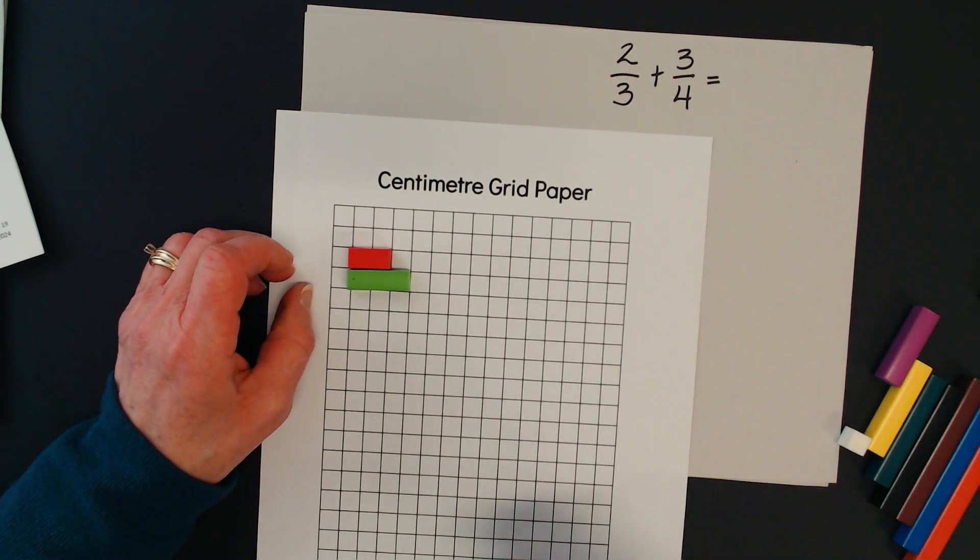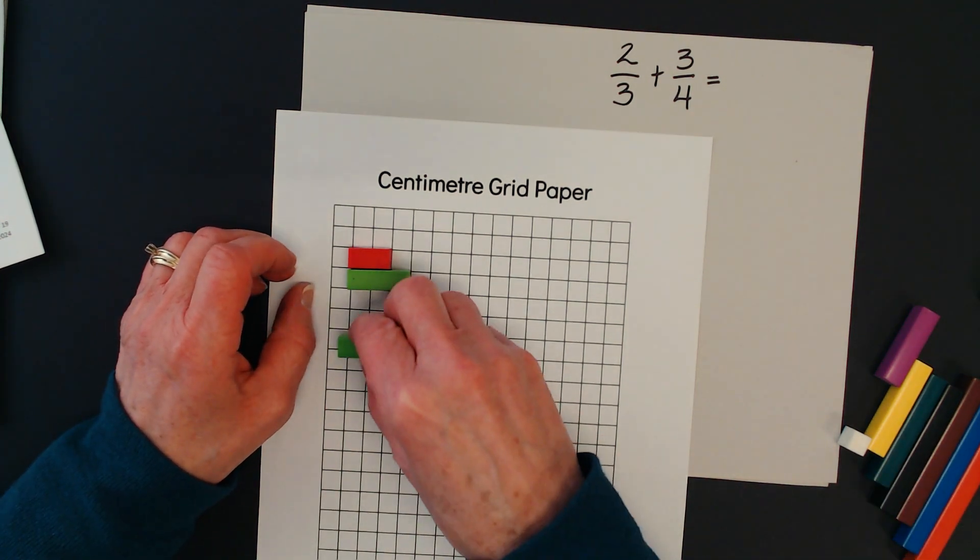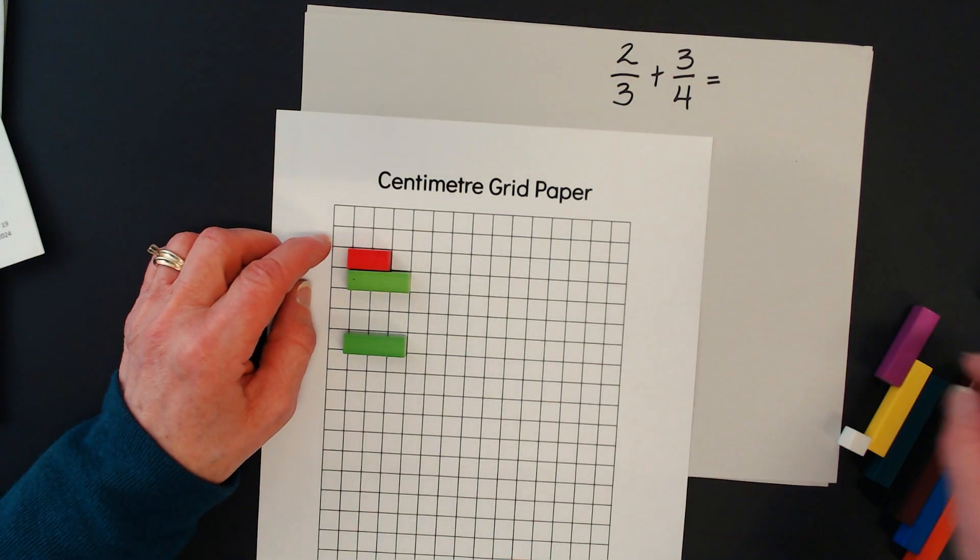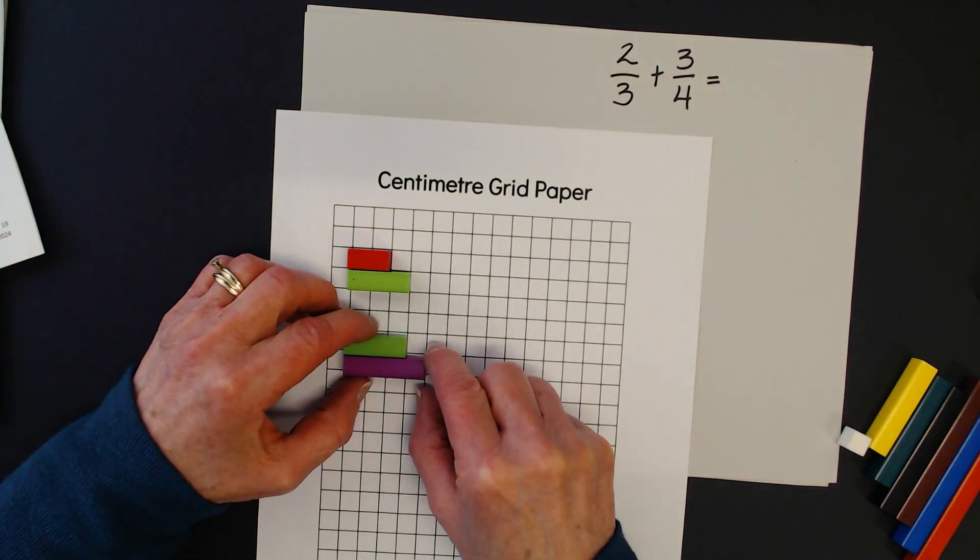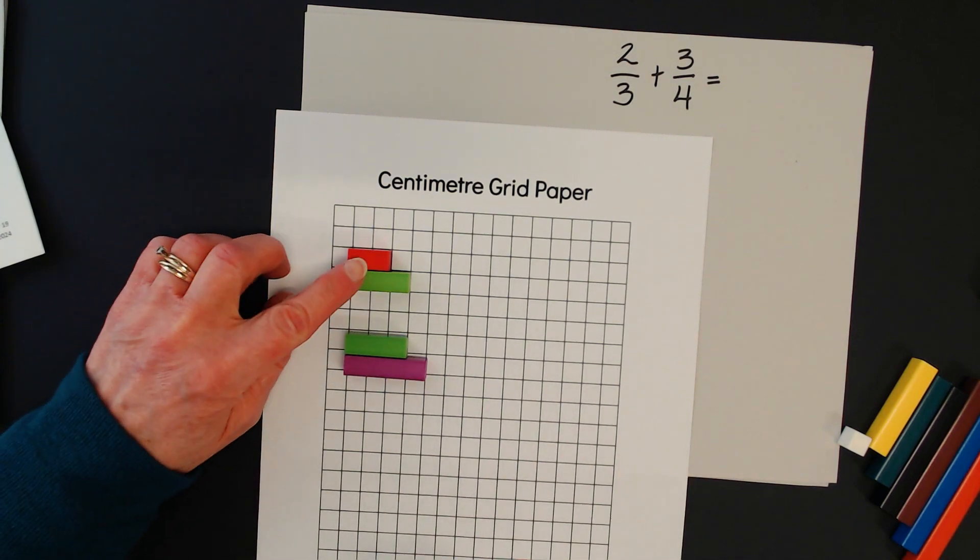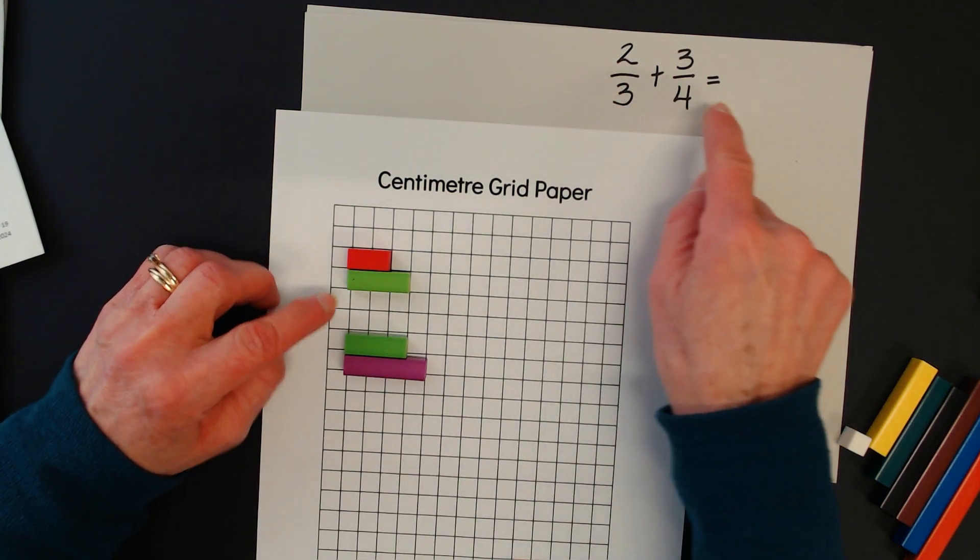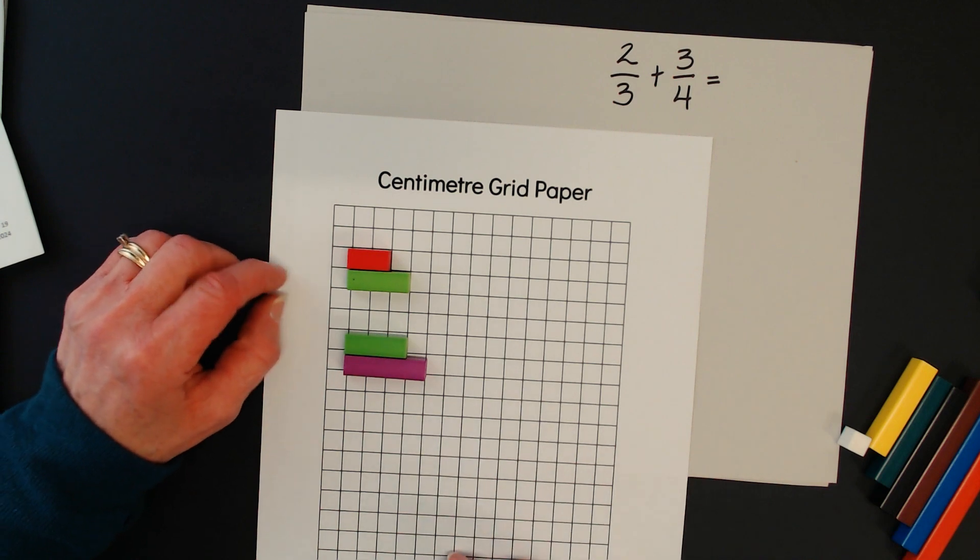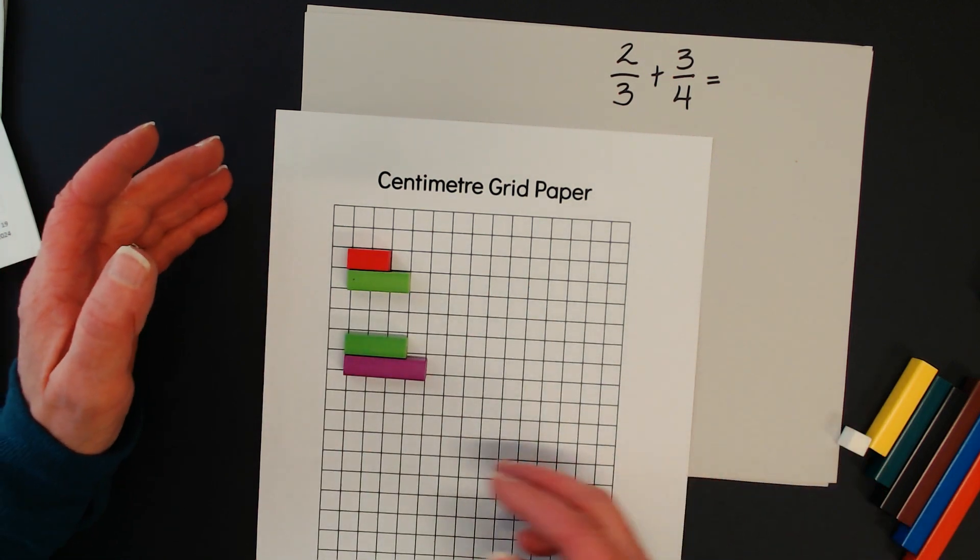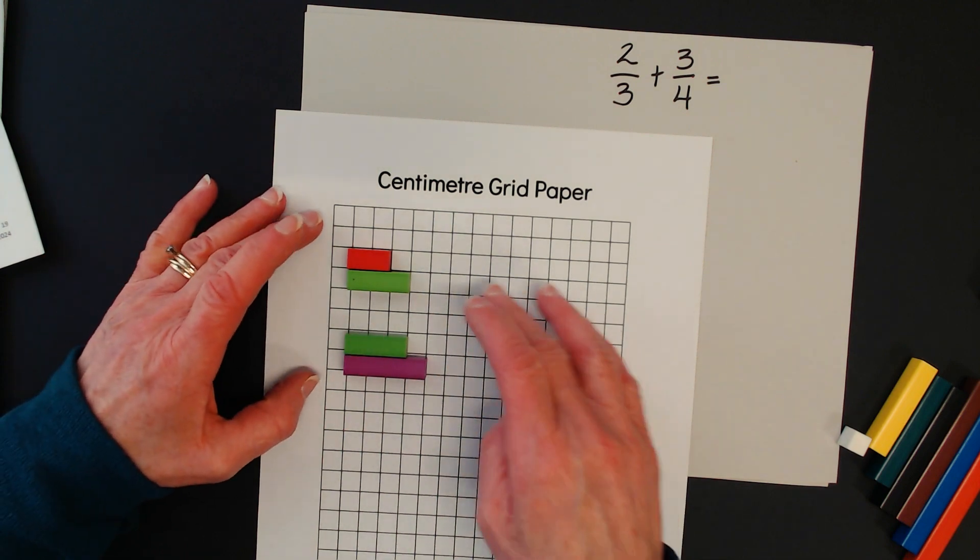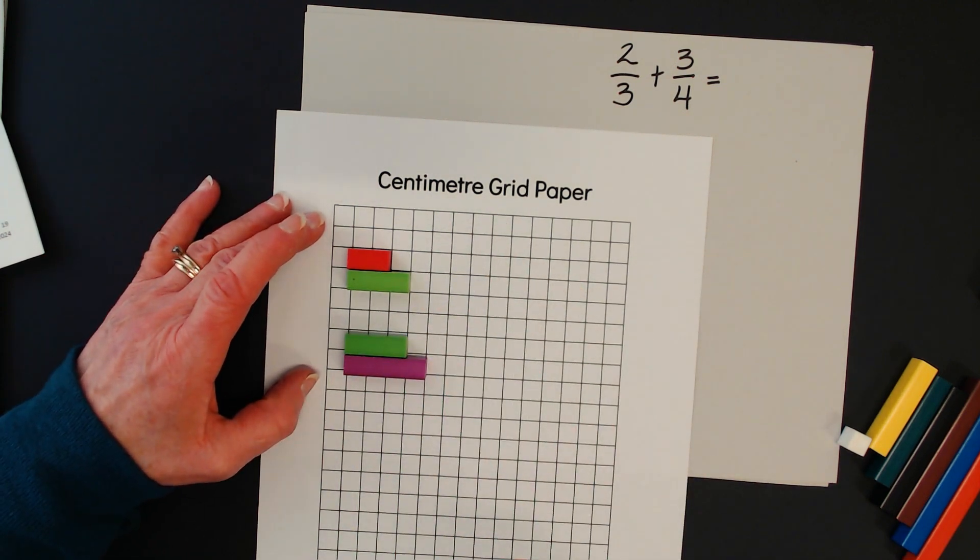Now I want to build three fourths. I know that this rod has a length of three, and then I'm going to use the next one that's a little bit longer, and that's fourths. So here I have two thirds and I have three fourths. Now we do not have the same denominator, so we need to think about building a common denominator.